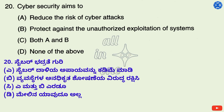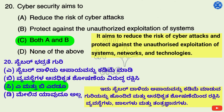Question 20. Cyber security aims to — Options: A. Reduce the risk of cyber attacks, B. Protect against the unauthorized exploitation of systems, C. Both A and B, D. None of the above. Right option is C: Both A and B. It aims to reduce the risk of cyber attacks and protect against the unauthorized exploitation of systems, networks, and technologies.